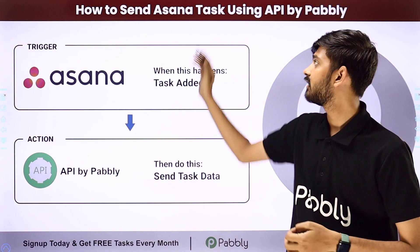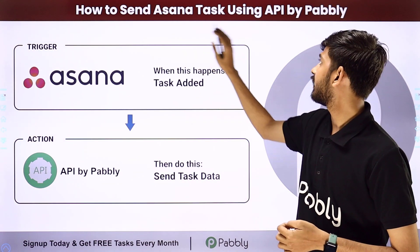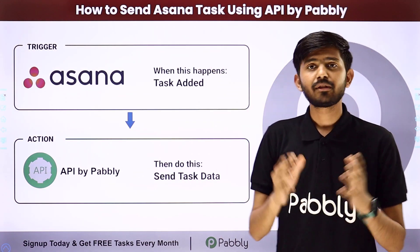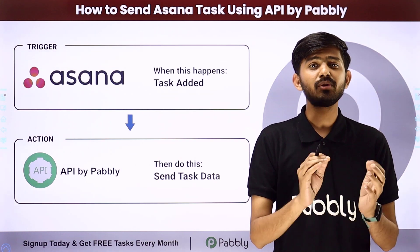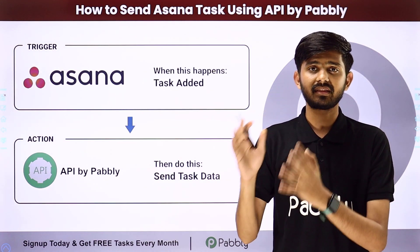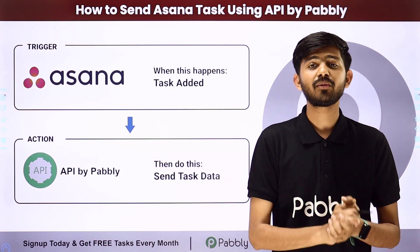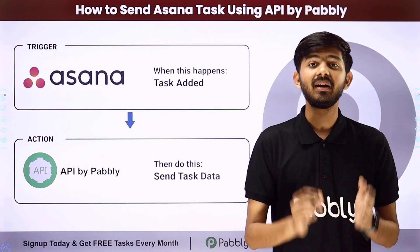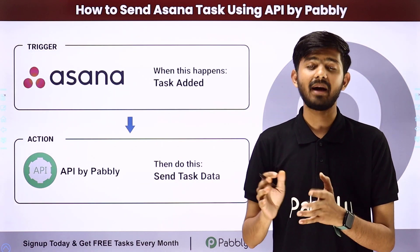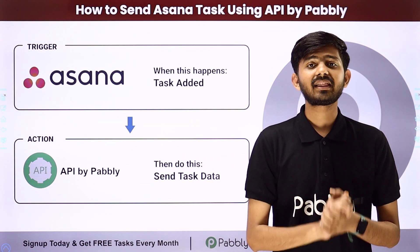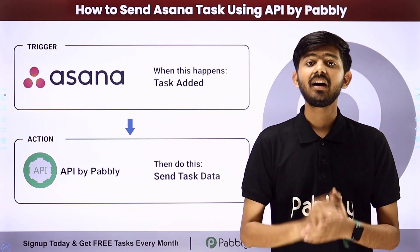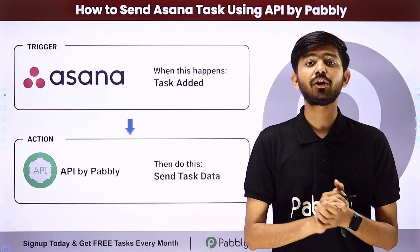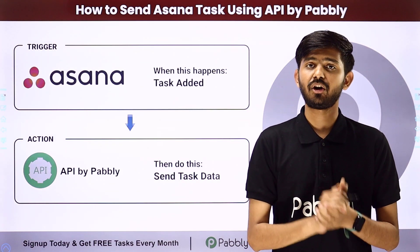Hello everyone. Today our topic is how to send Asana tasks using API by Pabbly. My objective is that whenever a new task is added in Asana, I want to automatically send those task details to any other application — for example, a new task is added in Asana and I want to send those task details automatically to my Discord channel.